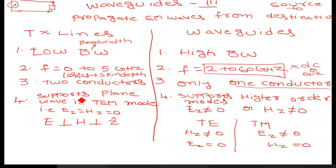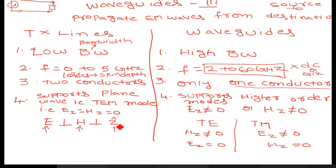Another major difference between transmission lines and waveguides is that transmission lines support only uniform plane waves in the transverse electromagnetic mode, that is the TEM mode. In TEM mode, the electric field, the magnetic field, and the direction in which the wave is propagating are all perpendicular to each other.